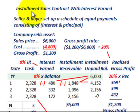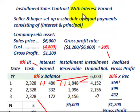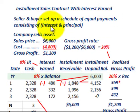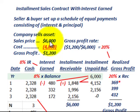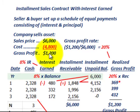What we're going to be going over here is an installment sales contract with interest earned on this contract. This is where the seller and the buyer set up a schedule of equal payments consisting of both interest and principal. For example, the company is going to sell an asset. The sales price is $6,000 and the cost of the asset is $4,800, so the difference gives us a gross profit of $1,200.